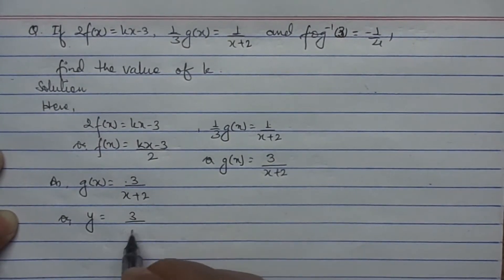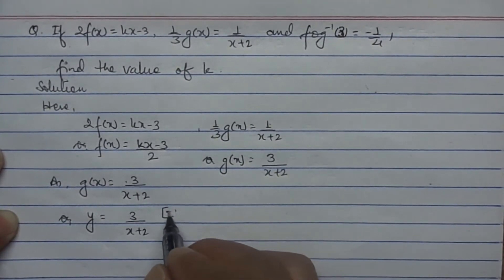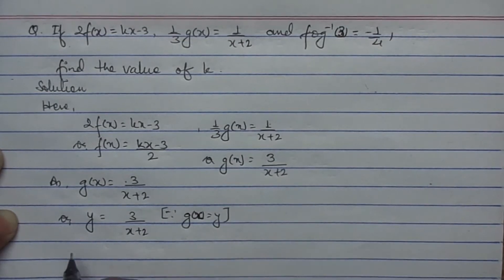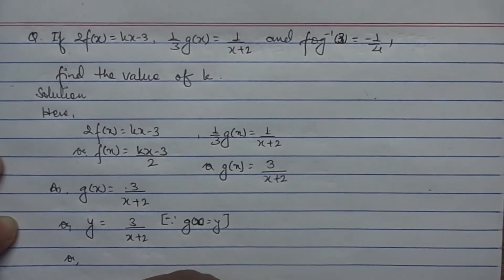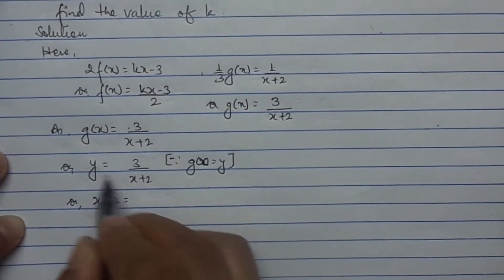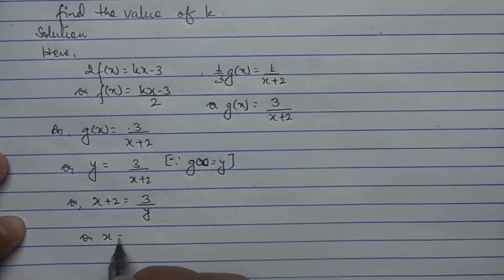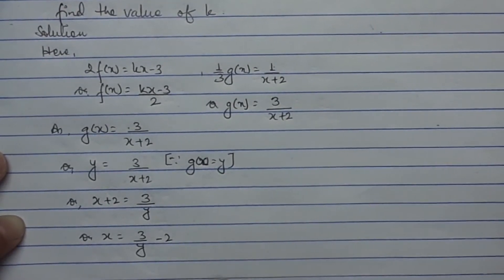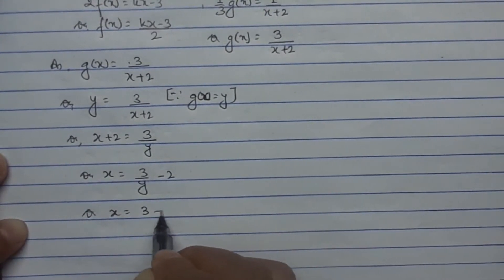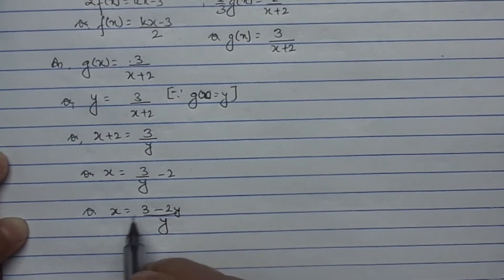Since g(x) is replaced by y, and x is the domain, y is the range. So y equals 3 divided by x plus 2, and we need to find the value of x. By cross-multiplication, x plus 2 equals 3 upon y, so x equals 3 upon y minus 2, which gives x equals (3 minus 2y) upon y.